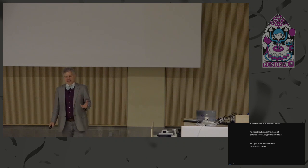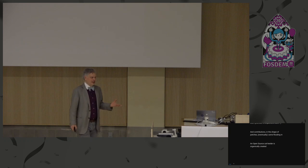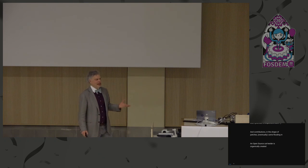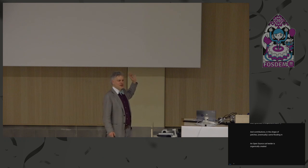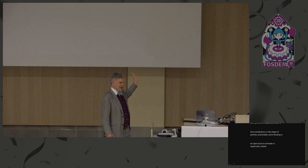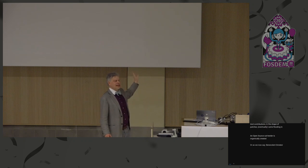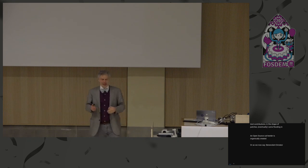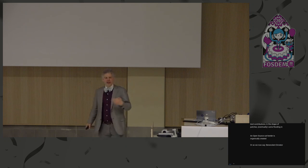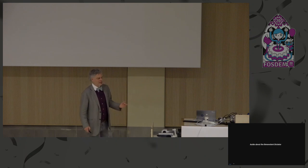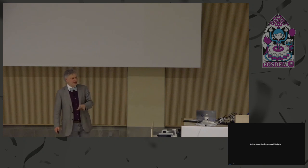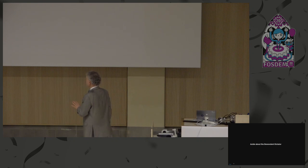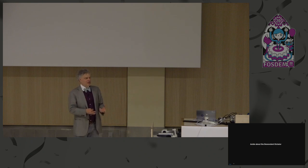An open source cat herder was actually organically born — something Linus was not expecting to do. He was expecting to be writing all the code, but what he ended up doing was herding the cats and integrating the patches. Now we call him a benevolent dictator. This is the standard model in open source.